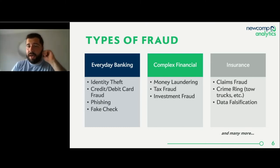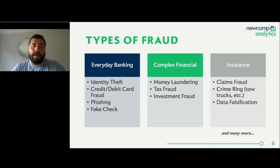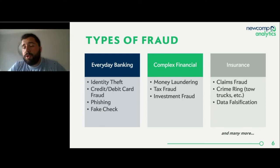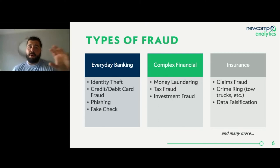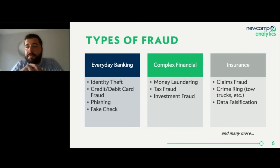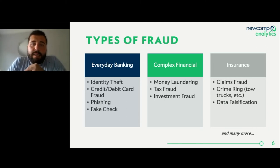The CRA is now looking at creating segments and models to be smart about who they audit. They have a limit on resources, so this helps them prioritize their caseload rather than just chasing whatever comes their way. Working with the CRA also means looking at who is under-declaring or over-declaring and identifying anomalous behavior in tax filings.